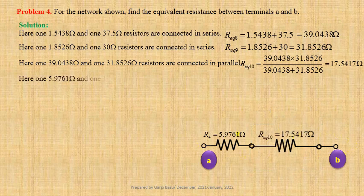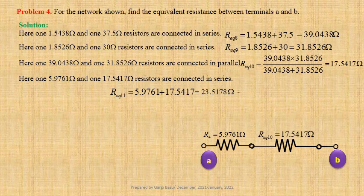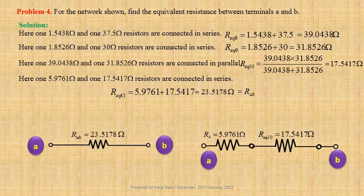Now one 5.9726 ohm and one 17.5417 ohm resistors are connected in series; their equivalent resistance Req11 equals 5.9726 plus 17.5417 equals 23.5178 ohm. Req11 equals Rab, the equivalent resistance between terminals A and B.